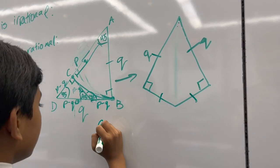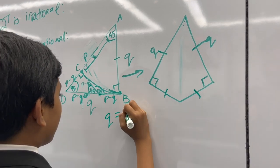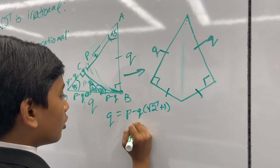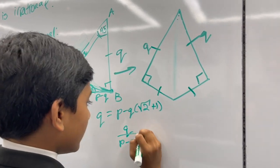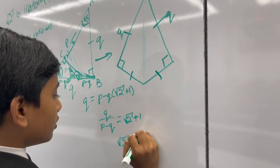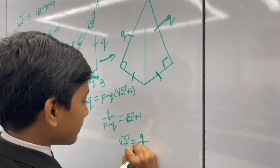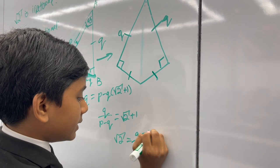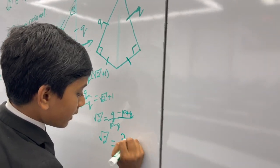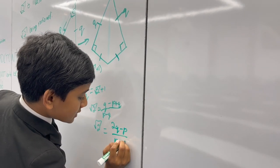So what do we have then? q is equal to p minus q times root 2 plus 1. So q over p minus q is equal to root 2 plus 1. So root 2 is equal to q over p minus q minus 1, which is basically minus p plus q. So we get root 2 is equal to 2q minus p over p minus q.